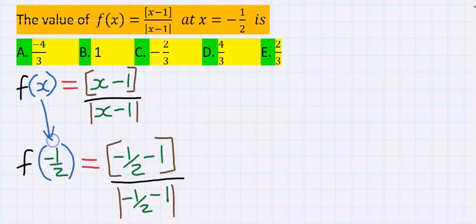in place of x, you're going to put minus 1 over 2. That is, anywhere I see x, I'm going to replace it with minus 1 over 2.